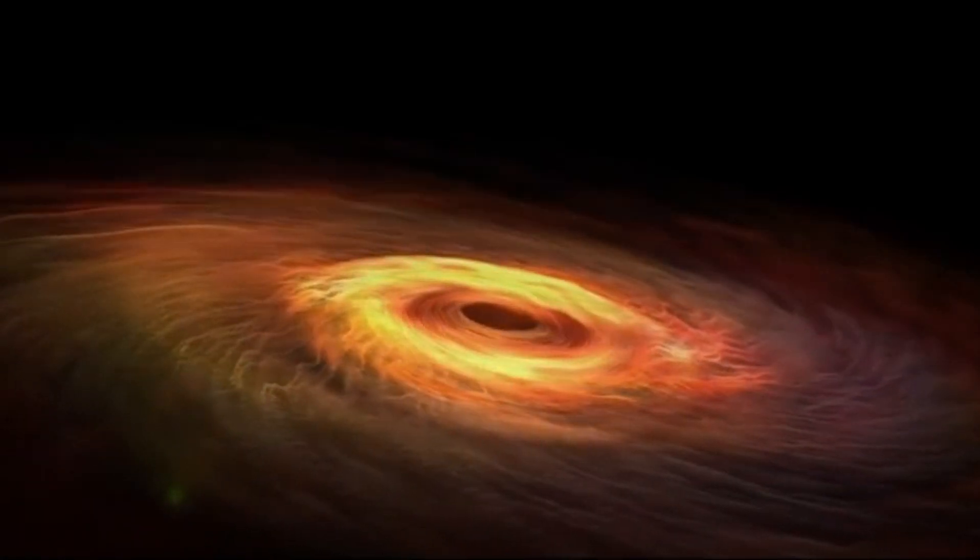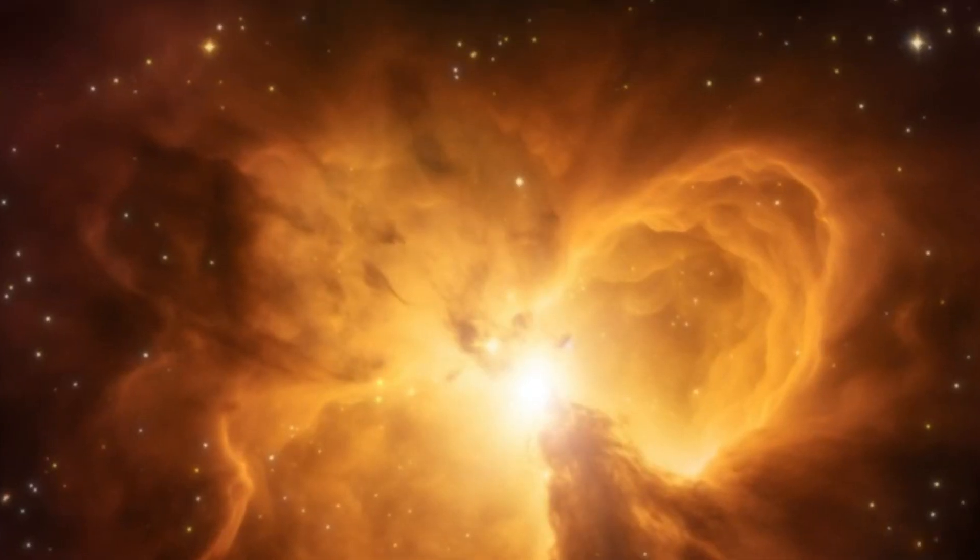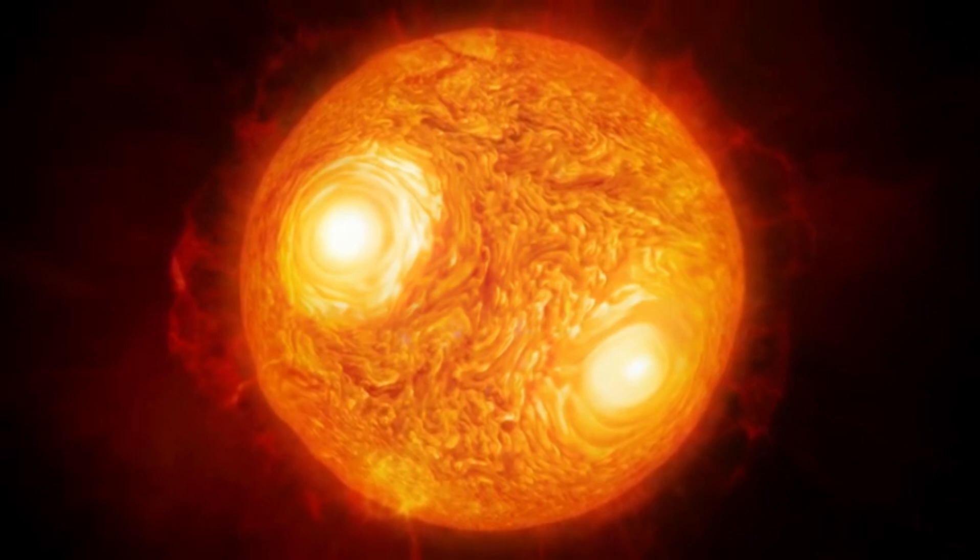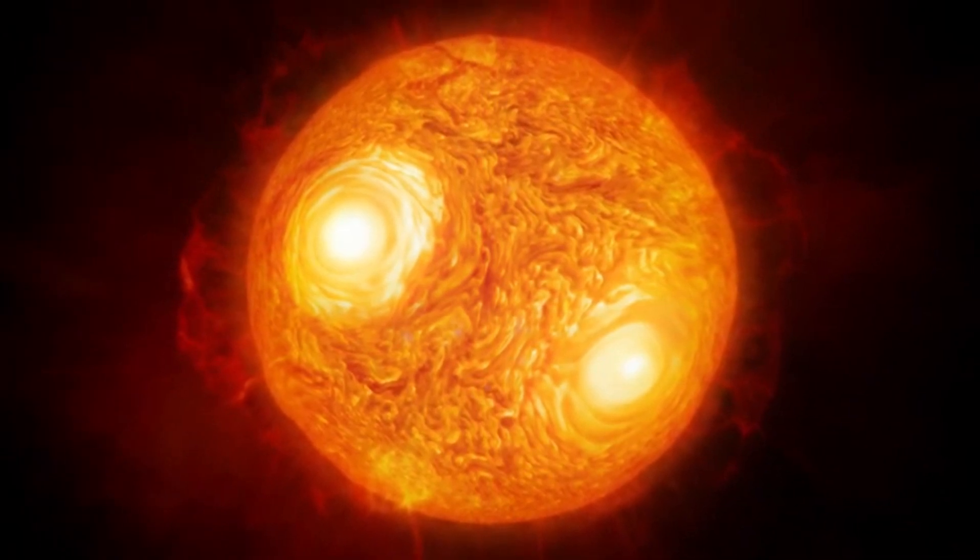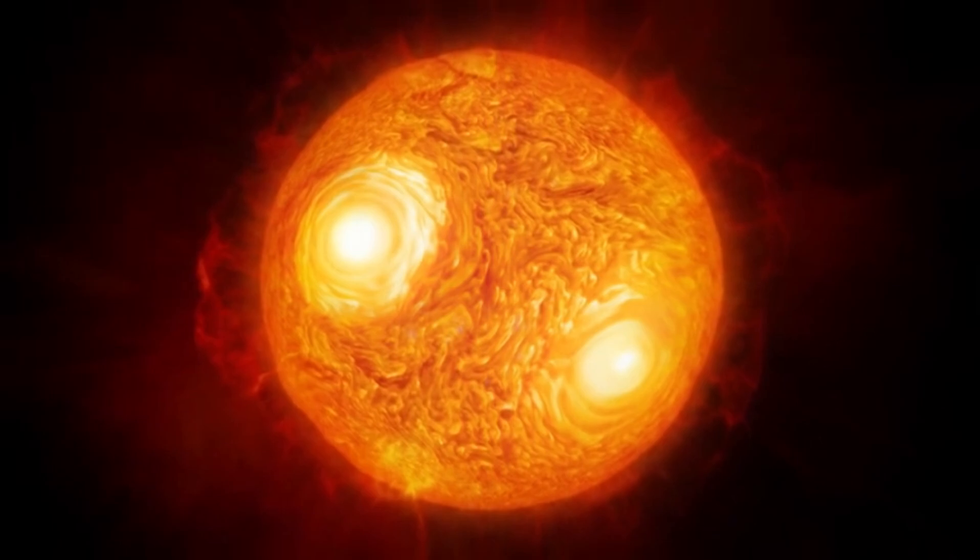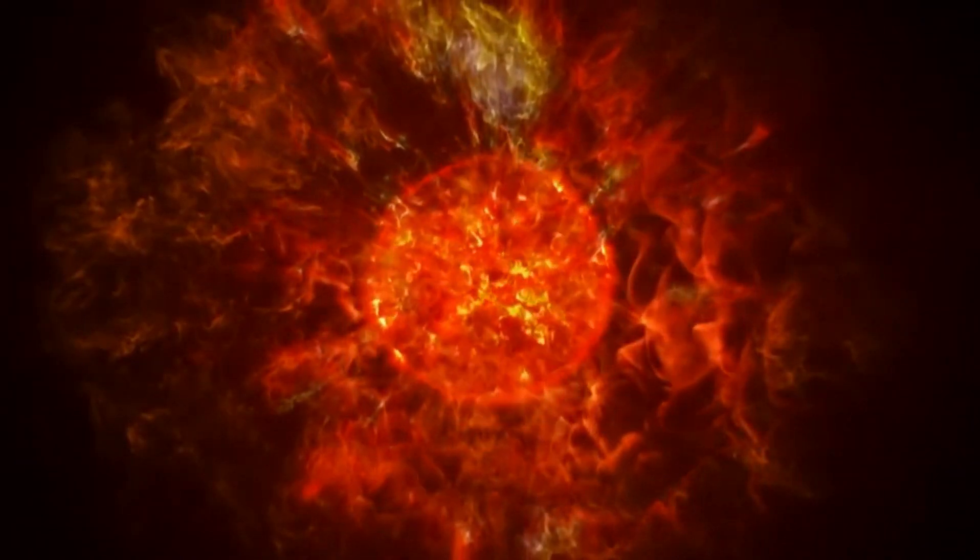Over time, this material forms molecules and dust, partially obstructing our view of the star and causing it to appear dimmer. In the case of Betelgeuse, the SME resulted in the ejection of a mass 400 billion times greater than what is typically observed during similar events on other stars or CMEs.